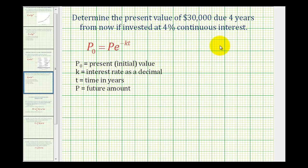We want to determine the present value of $30,000 due four years from now if invested at 4% continuous interest. So this question is asking us, what amount do we need to invest today at this interest rate to grow to $30,000 in four years?